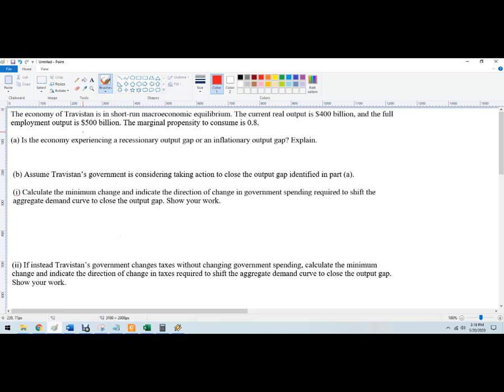I might want to build a model to see what government policies would do to a national economy. The economy of Travestan is in short-run economic equilibrium. The current real output is $400 billion and the full employment output is $500 billion. The marginal propensity to consume is 0.8, which means if I give the population a dollar, they're going to spend 80 cents and save 20 cents.